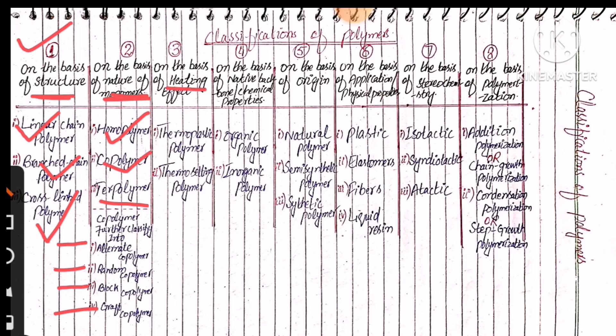On the basis of heating effects, polymers can be further classified into two subclasses: first is thermoplastic polymers and second is thermosetting polymers.